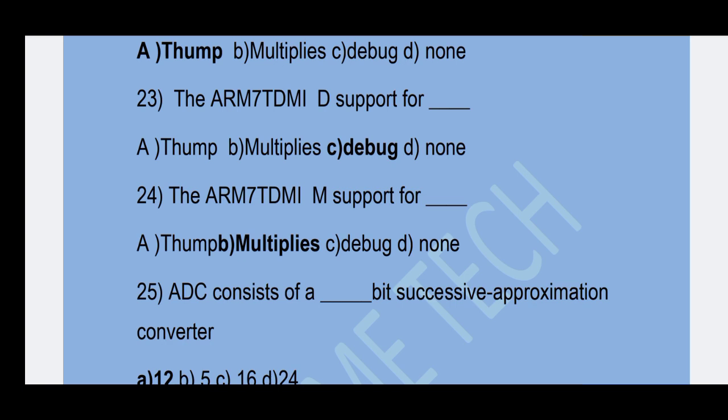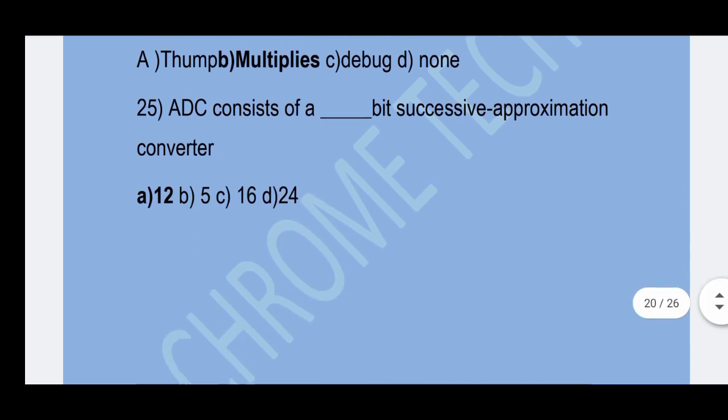25th question: The ADC consists of a 12-bit successive approximation converter. Option A — 12 is the correct answer.